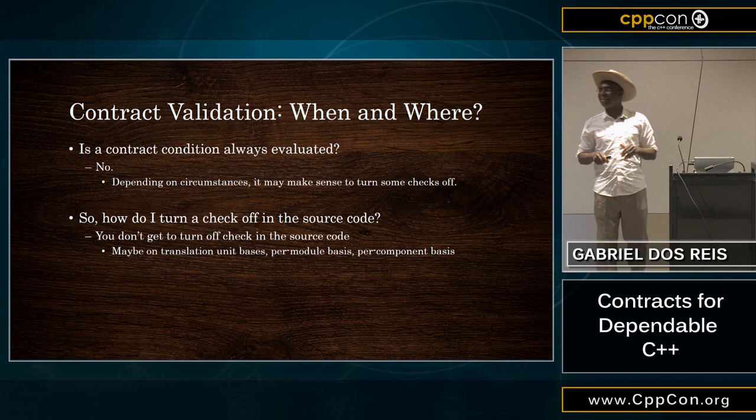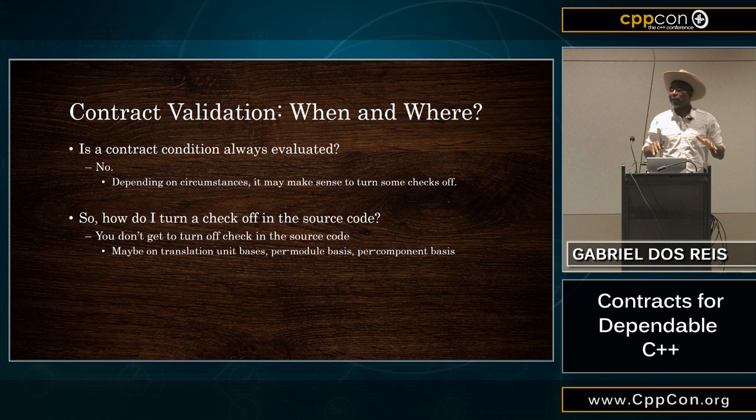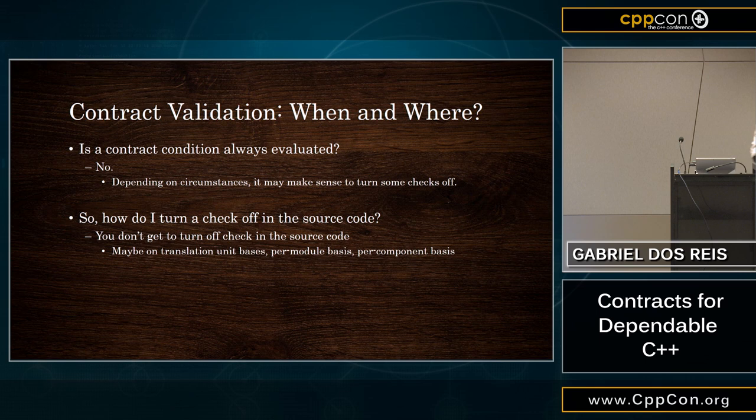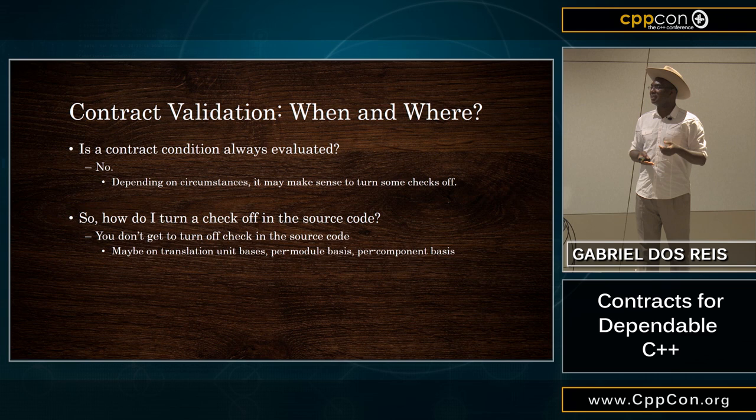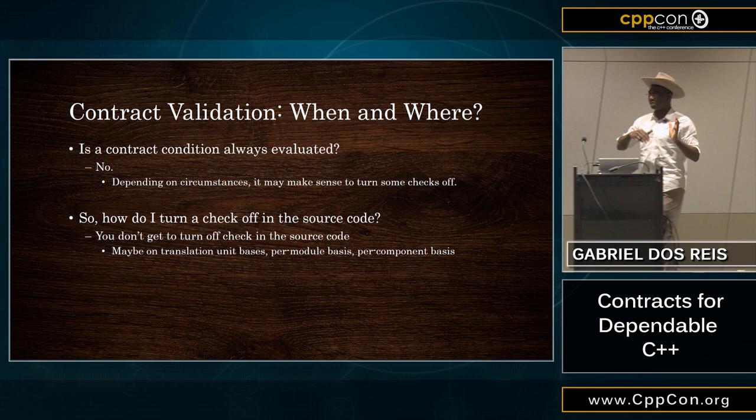In this proposal, you don't get to write in the source code 'please check this' or 'please don't check.' What you will be able to do is: when you compile a translation unit, the source file, you will be able to say 'check the calls in this file.' Think of it as building debug vs. retail — you can build an entire component that's checked (debug) or unchecked (retail).